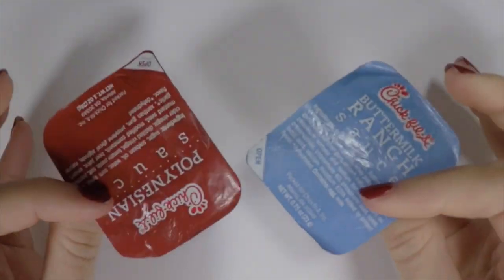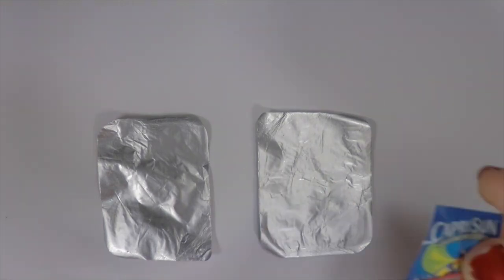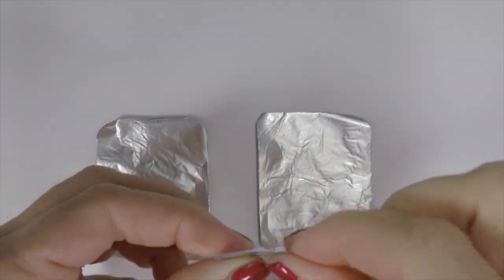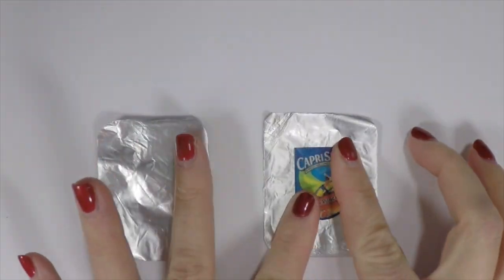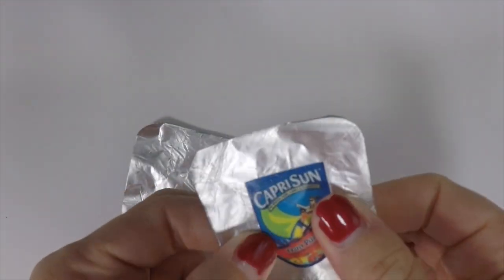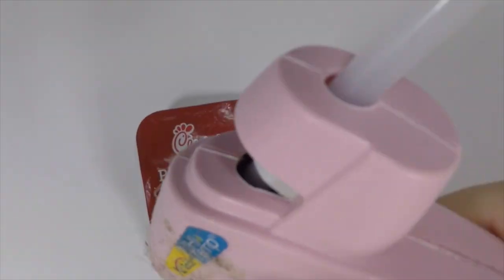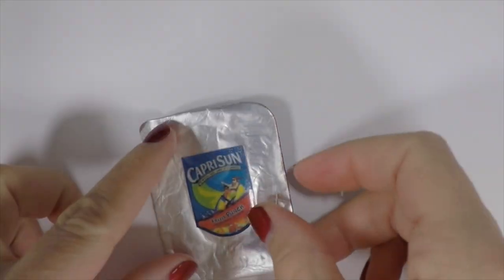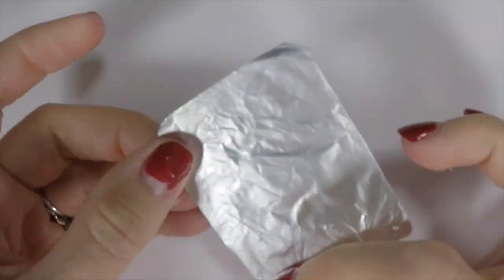Now for your Capri Suns, you're gonna need to use the top foils from your condiments. You need one for the front and one for the back. Take your Capri Sun printable and glue it on one. Once that's completely dry, glue the two together. Glue the side, the top, and the side. Make sure not to glue the bottom together yet. Also, make sure that the silver foil is on the side so it looks like a Capri Sun.